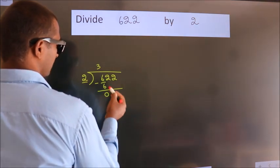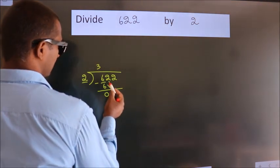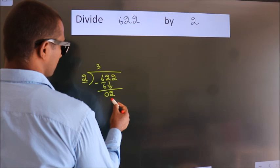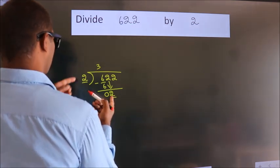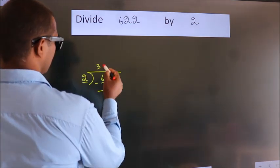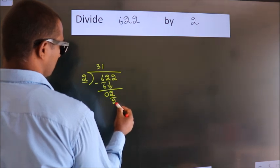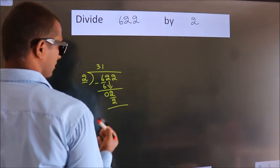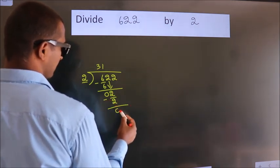After this, bring down the beside number. So 2 down. When do we get 2 in the 2 table? 2 times 1 is 2. Now we subtract. We get 0.